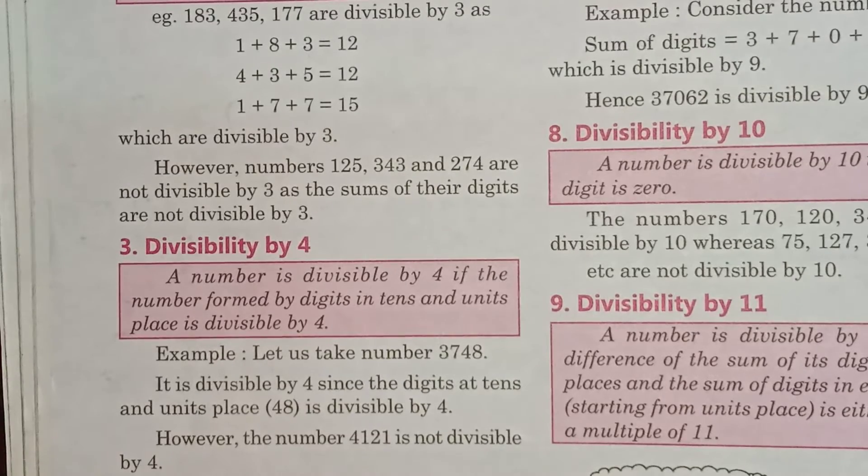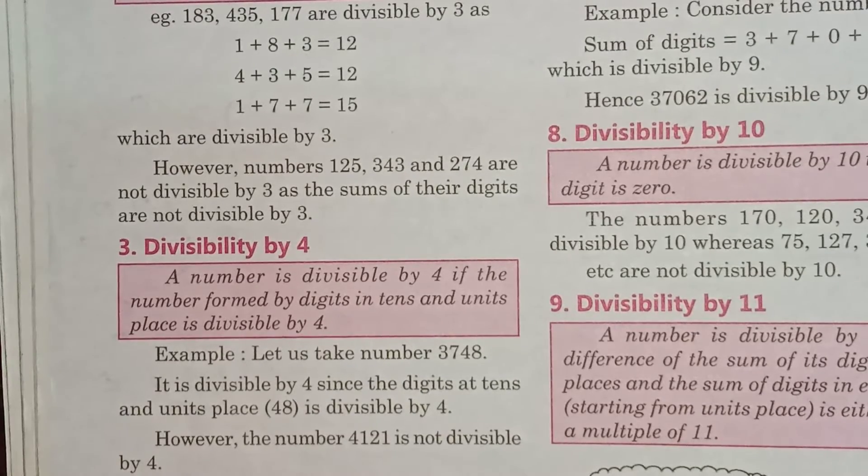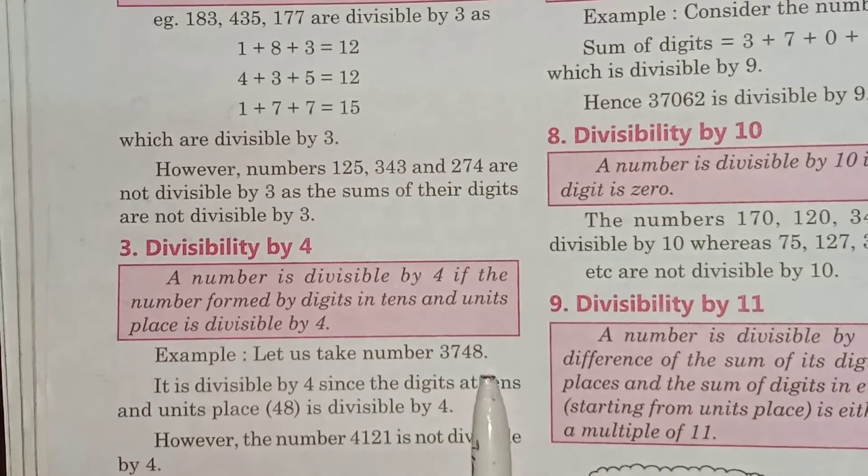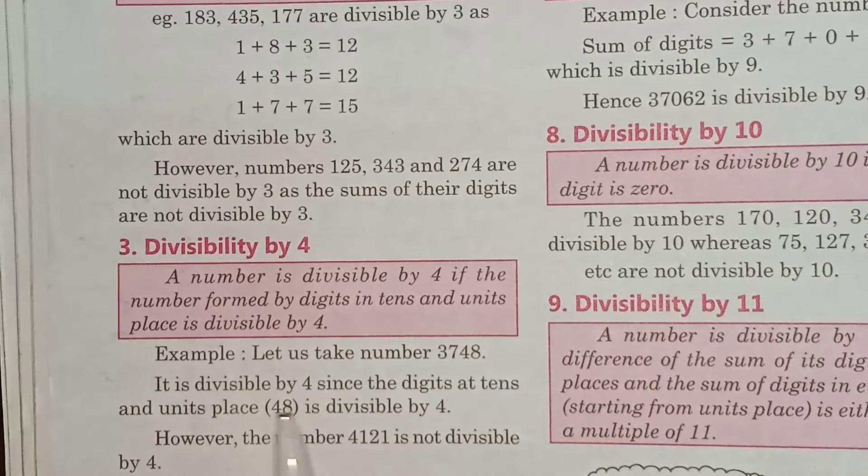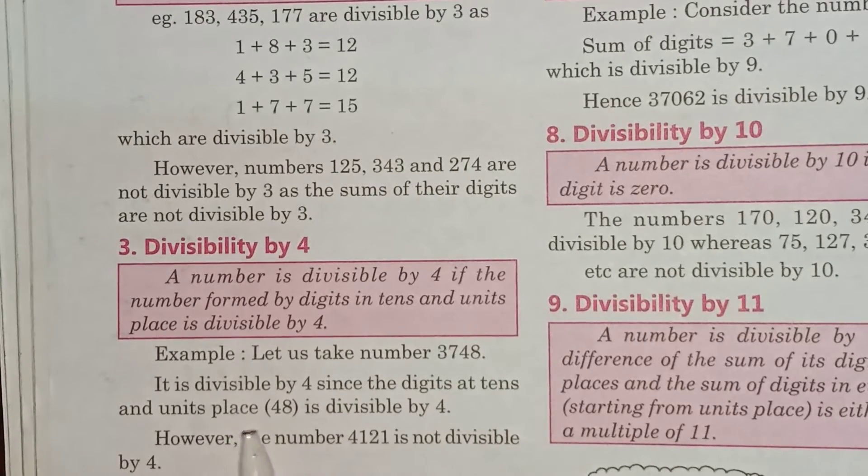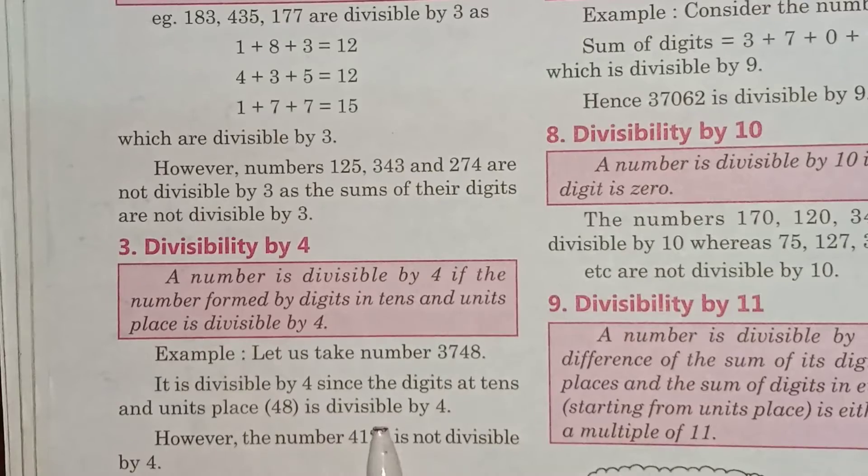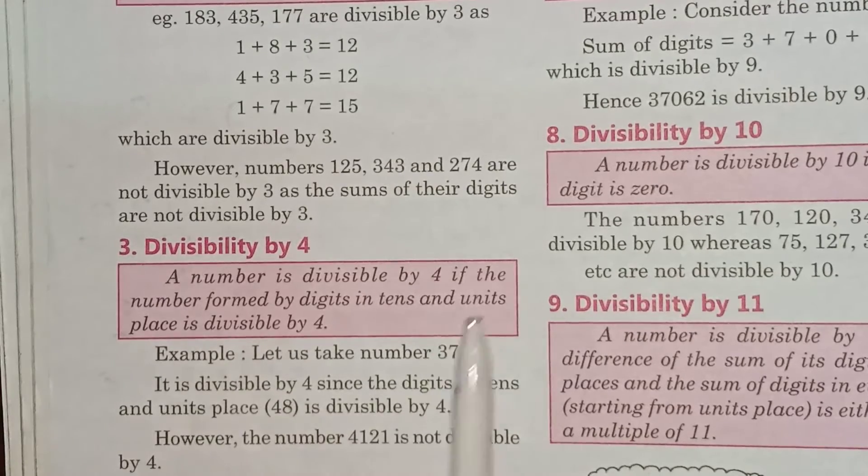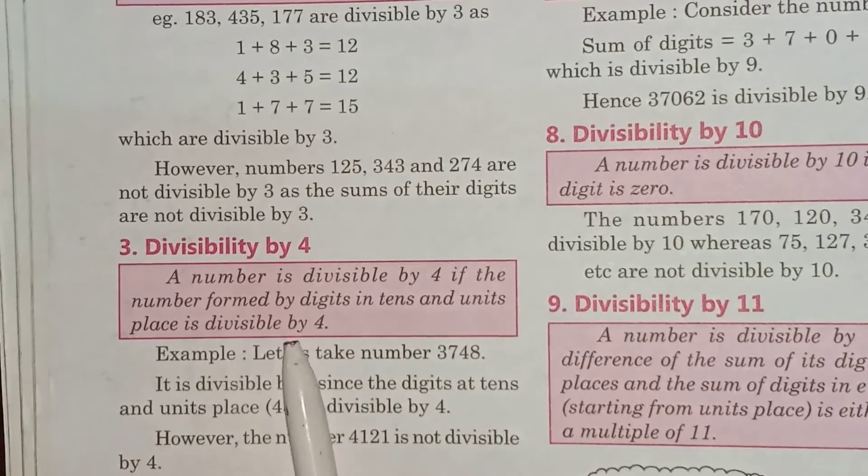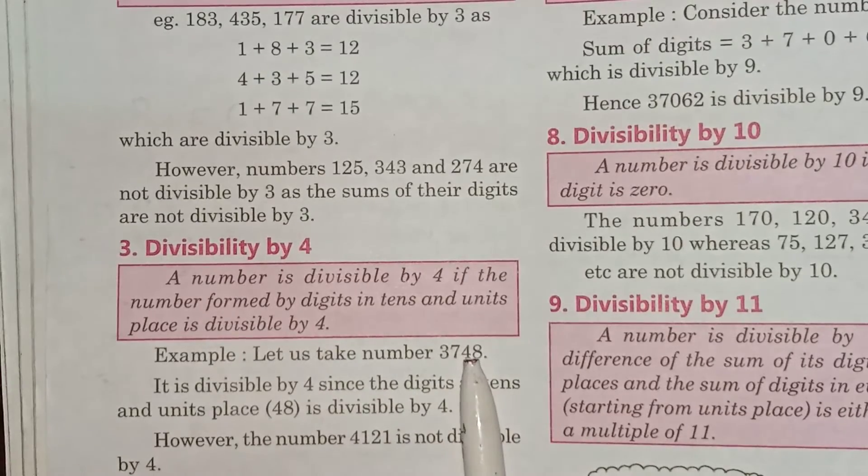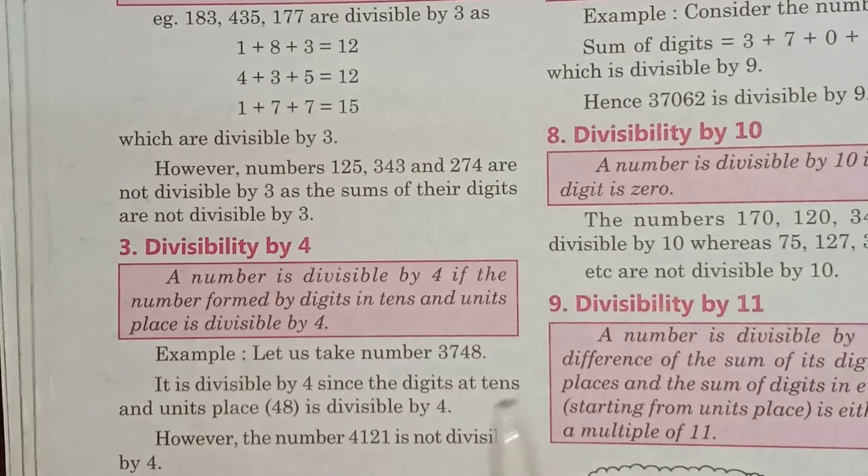For example, let's take the number 3748. It is divisible by 4 since the digits at tens and units place (48) is divisible by 4. If the number formed by digits in tens and units place is divisible by 4, then the whole number will be divisible by 4.